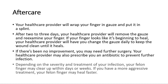Your healthcare provider will wrap your finger in gauze and put it in a splint. After two to three days, they will remove the gauze and re-examine your finger. If it looks like it's beginning to heal, you will change the gauze daily to keep the wound clean until it heals. If there's been no improvement, you may need further surgery. Your healthcare provider may also prescribe an antibiotic to prevent further infection. Depending on the severity and treatment of your infection, your felon finger may clear up within days or weeks, and a more aggressive treatment may lead to faster healing.